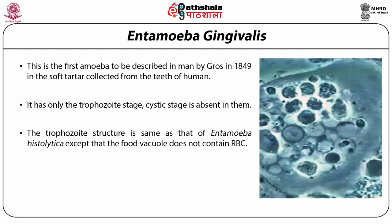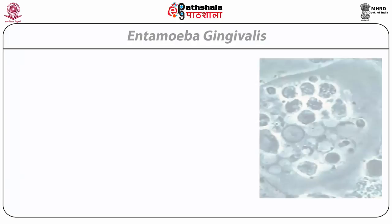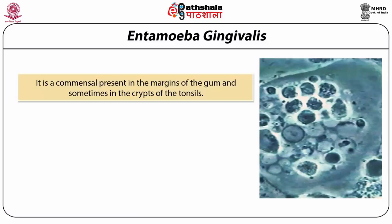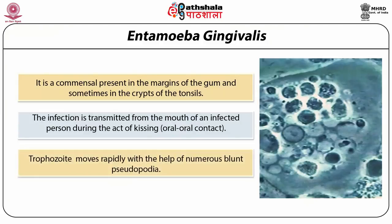The trophozoite structure of Entamoeba gingivalis is the same as that of Entamoeba histolytica, except that the food vacuole does not contain RBCs but instead contains cellular debris, bacteria, and ingested leukocytes. It is a commensal present in the margins of the gums and sometimes in the crypts of the tonsils. Infection is transmitted from the mouth of an infected person during kissing — oral-oral contact. Trophozoites move rapidly with the help of numerous blunt pseudopodia.